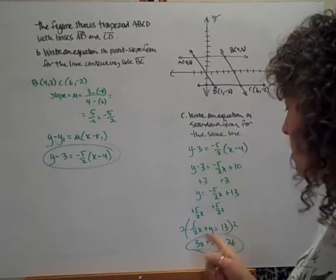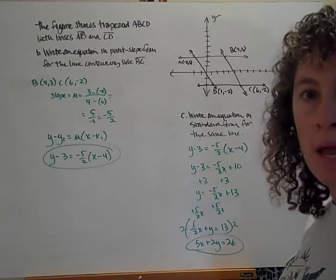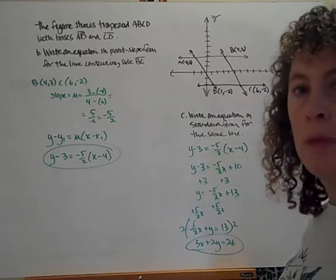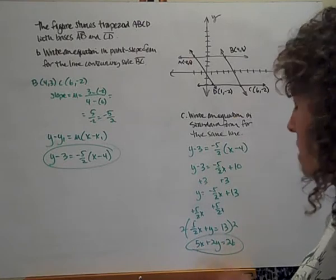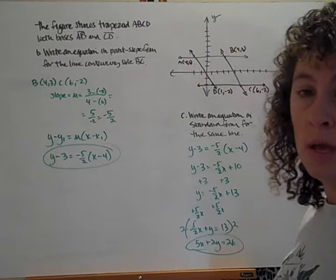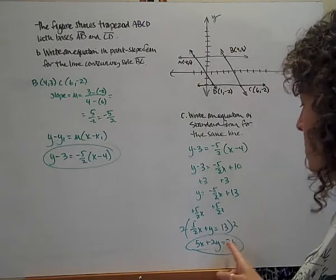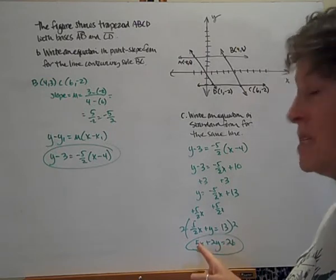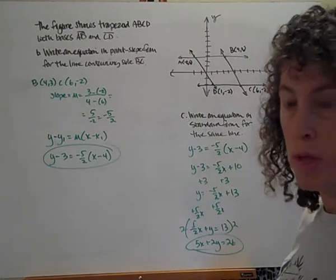So I'm going to go through that checklist. A has to be greater than or equal to 0. Yep. A and b can't both be 0. I'm good to go. a, b, and c have to be all integers. Yes, yes, yes. And I can't have a common factor other than 1 for a, b, and c. Now, b and c have a common factor of 2, but it needs to be a, b, and c. So I can't really do anything else with that.